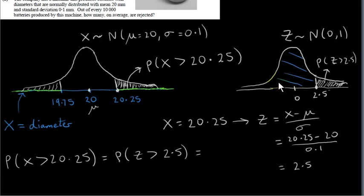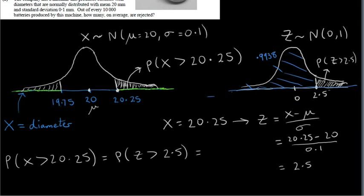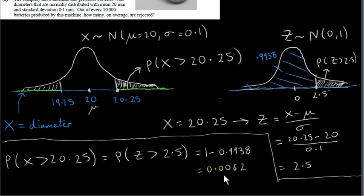This blue area of 0.9938 is the area to the left of 2.5. To find the white tail area, we use the fact that the total area underneath any probability distribution is 1, since the probability of selecting any value must equal 1. So to calculate this tail, we work out 1 minus 0.9938, which gives us 0.0062.